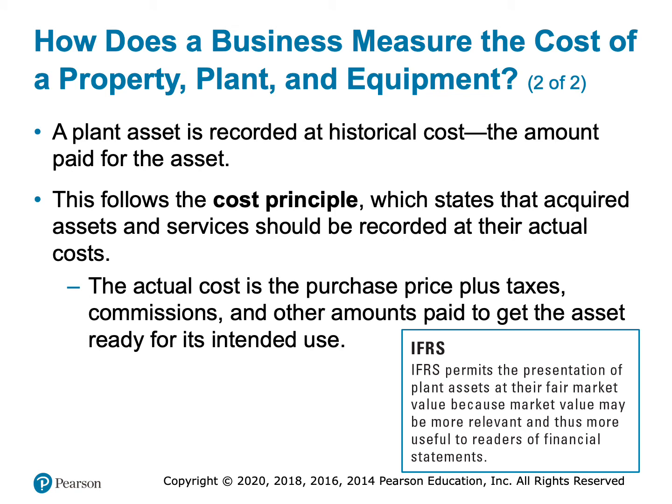Just like all assets, plant assets are recorded at their historical cost, which means the amount that we paid for them. The cost principle says that all assets should be recorded at their actual cost — everything we have to pay to get these assets ready for their intended use. So if we have to pay sales tax, commissions, a setup fee, or shipping, all of that gets included, just as we included those costs for inventory back in chapters 5 and 6.